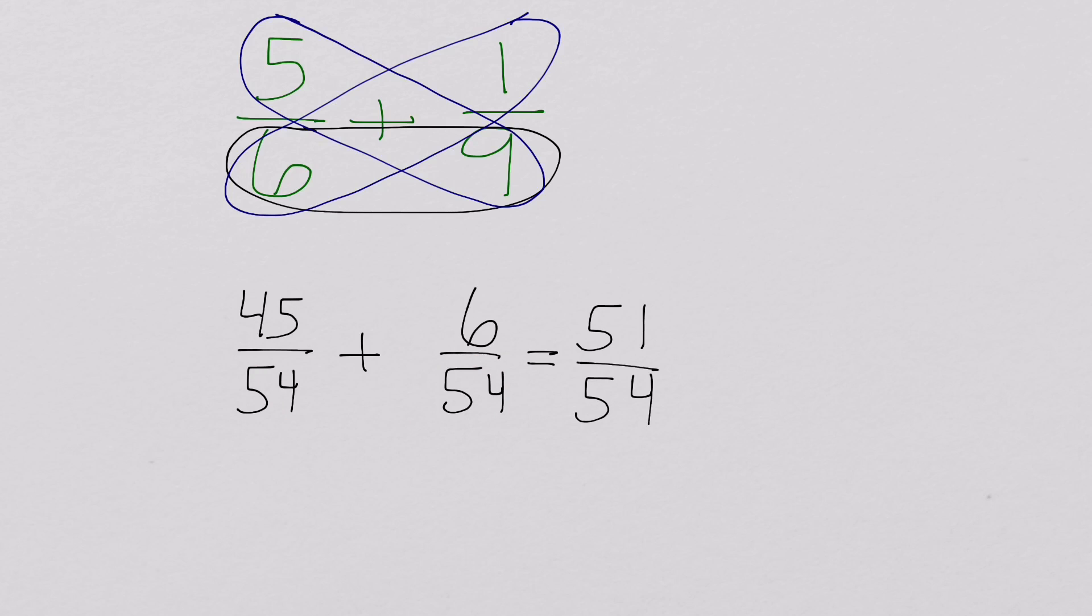54, while it is a common denominator, it's not the smallest denominator we could have found. Because of that, we now have a much larger denominator, and, well, we're going to have to simplify.